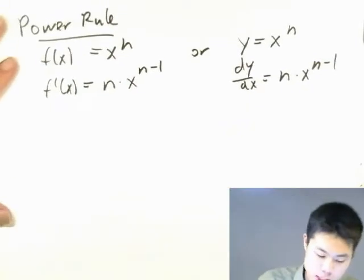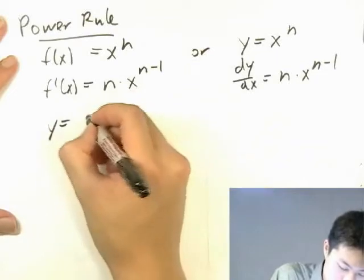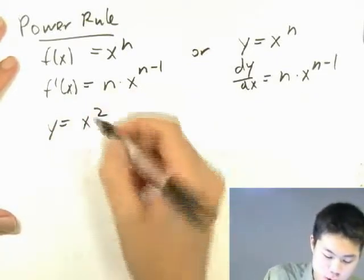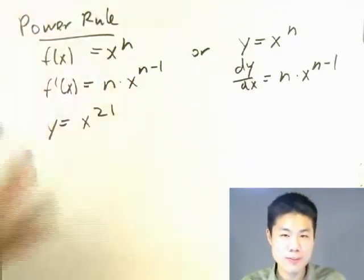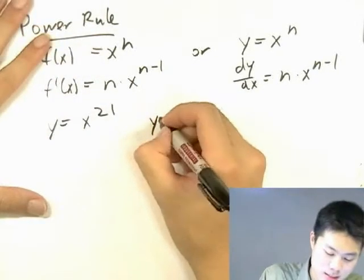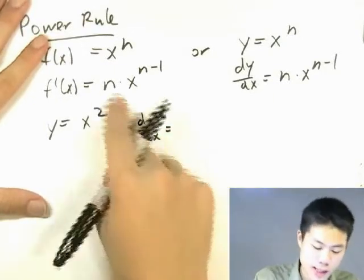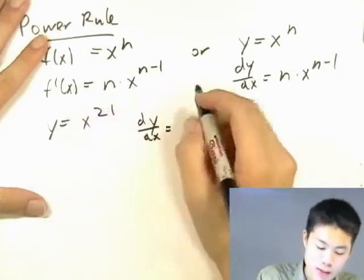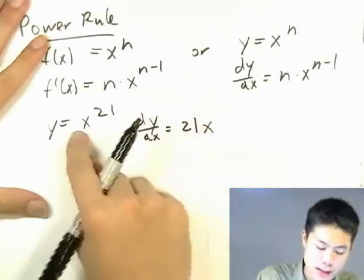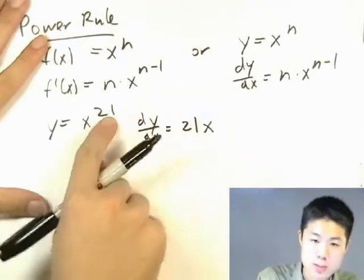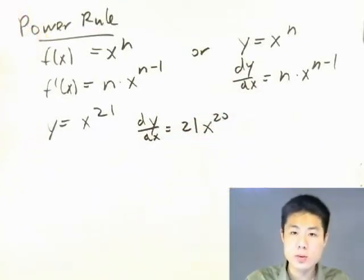For example, if y equals x to the 21st, then dy over dx: you take the power 21, bring it down, and multiply x raised to 21 minus 1, which is the 20th. So dy over dx equals 21 times x to the 20th.